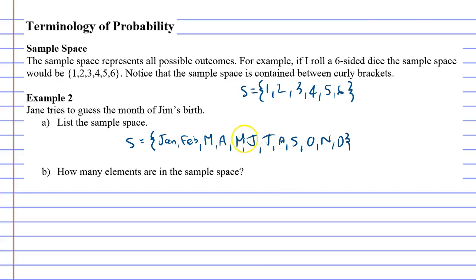Question b says: How many elements are in the sample space? That just means count the number of elements. So January is an element, February is an element, and because it's 12 months in the year, we have 12 elements in the sample space.